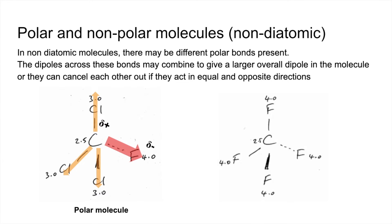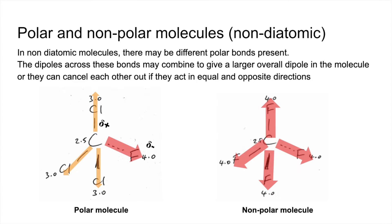Moving on to tetrafluoromethane, CF4, we've got four C-F bonds each with the same dipole, but they are acting in equal and opposite directions in the molecule. So effectively they all cancel out, and this is therefore a non-polar molecule.